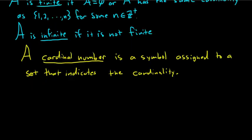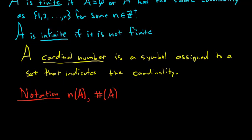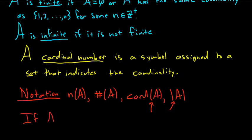There are a few notations for cardinal numbers: N with an A, a pound sign with an A, card A, or absolute value bars around A. If A is finite, then |A| equals N, where N is either 0 if it's the empty set, or a positive integer otherwise.